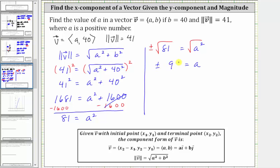But we are told that a is positive, so our final answer is a is equal to positive nine, which means the vector via component form has an x component of a, which we now know is nine, and a y component of 40, which was given. I hope you found this helpful.